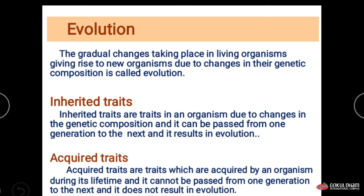Due to evolution, there are two types of characters: inherited characters and acquired characters. Inherited characters are those traits which are inherited from parents to offspring. Acquired characters are those characters which are acquired by particular individuals and will not pass from generation to generation.